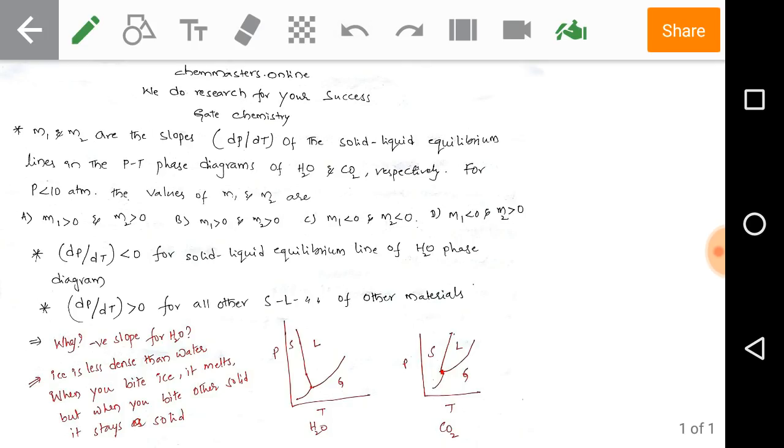So option A: M1 is greater than 0 and M2 is greater than 0. B: M1 is greater than 0, M2 is greater than 0. C: M1 is less than 0 and M2 is less than 0. And D: M1 is less than 0 and M2 is greater than 0.